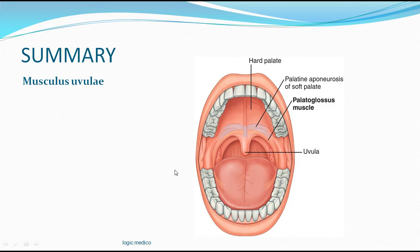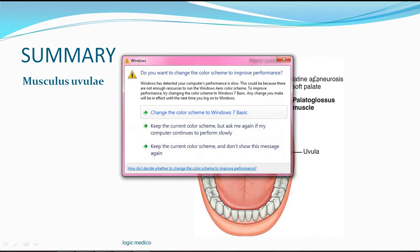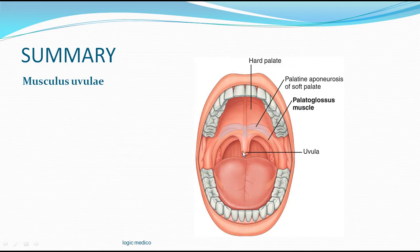In summary, Musculus Uvulae is a muscle present within the uvula. There is a pair of muscles, though the uvula appears as one conical projection. Origin: posterior nasal spine. Insertion: mucous membrane of the uvula. Action: it deviates the uvula to the right or left, and mainly anchors the uvula onto the pharyngeal wall as an anchorage point, thereby preventing food from entering the nasopharynx.